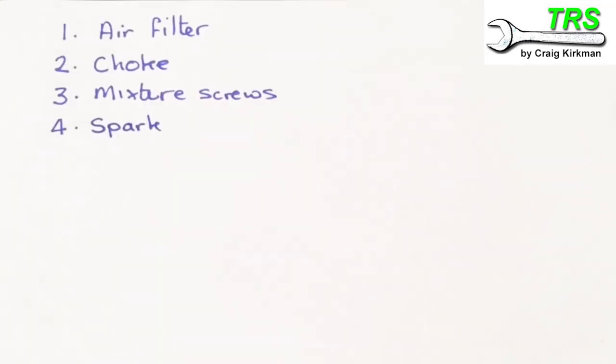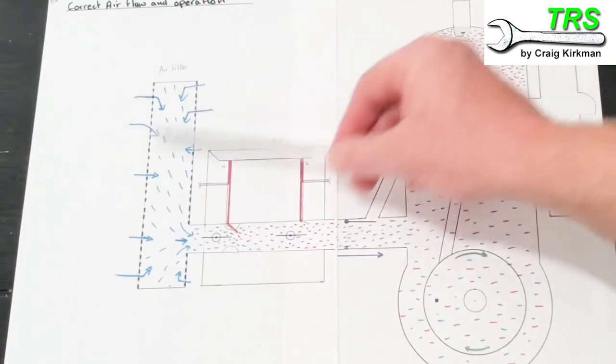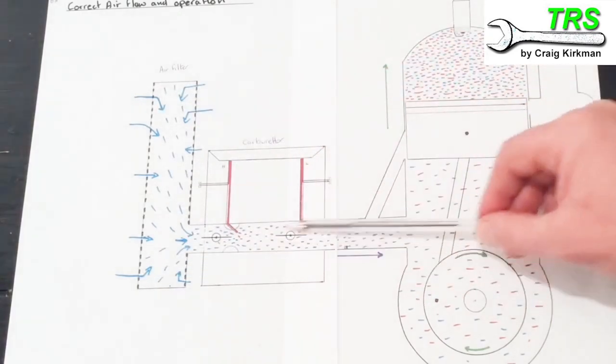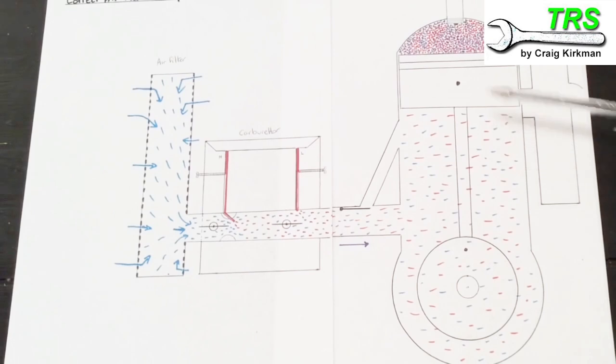And so number four, spark. We can see here that all's working correctly. We've got a good flow of air coming through, mixing with fuel, everything's going. The fuel and air mixture is being compressed up there nicely, and there's a good atomization of fuel there. So a good air to fuel ratio there.